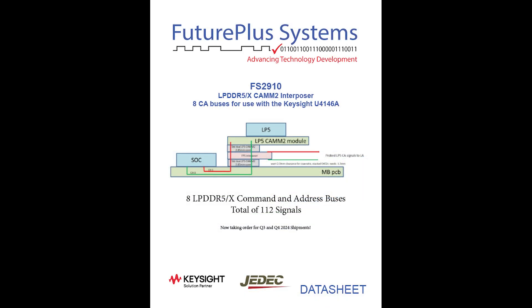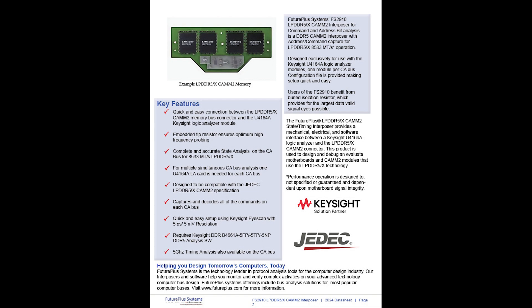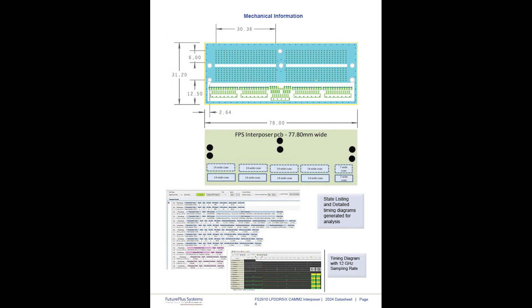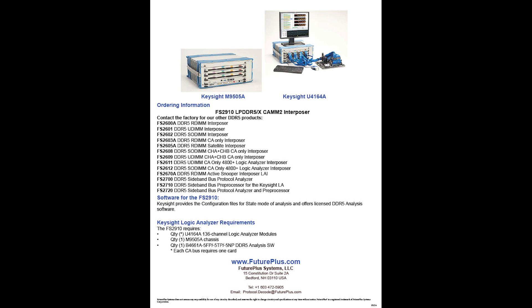This is our latest data sheet for the FuturePlus LPDDR5 CAM2 Interposer. All of the salient features of the product are listed on the data sheet. We've included the LPDDR5 signal pin-out with labels, and the interposer module size and some screen captures are in the data sheet as well. On the last page, you'll find some Keysight part numbers as well as FuturePlus part numbers related to this product.